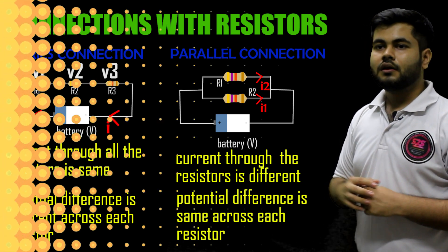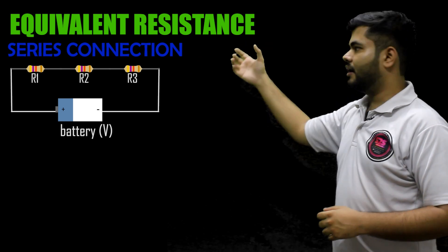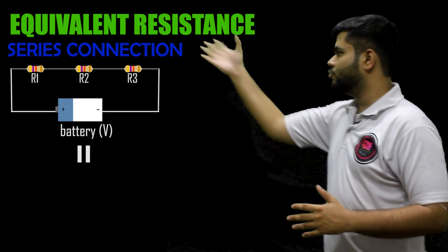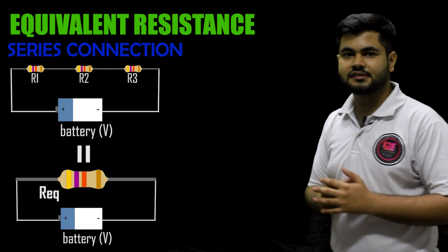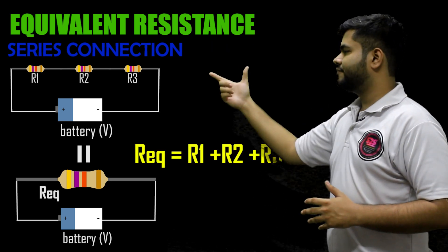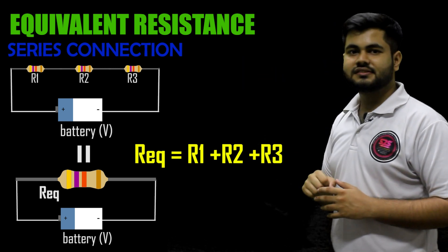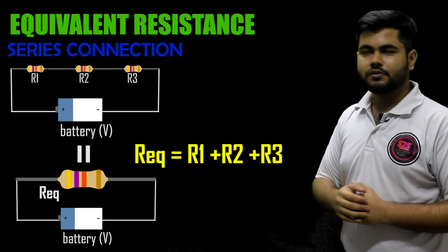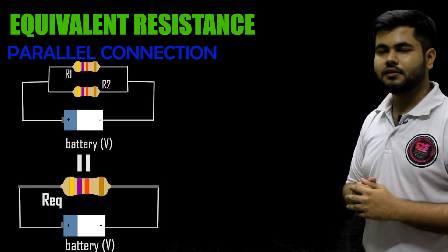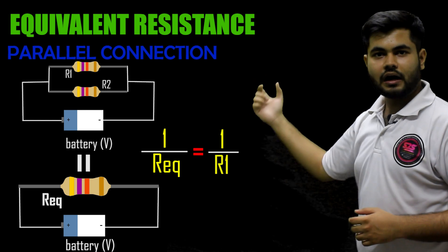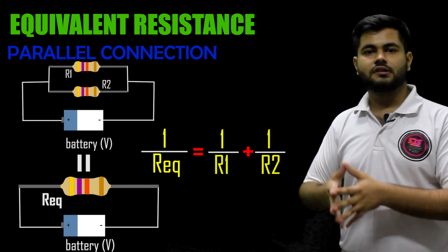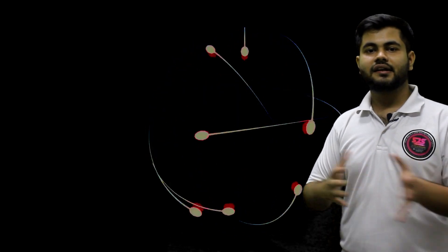Now, suppose R1, R2, and R3 are connected in series. Equivalent resistance means if we remove all three and place only one resistor, the circuit behaves the same. For series connection, the formula is: R_equivalent = R1 + R2 + R3. For parallel connection, the formula is: 1/R_equivalent = 1/R1 + 1/R2 + 1/R3. We will see the derivation of these formulas in further classes.